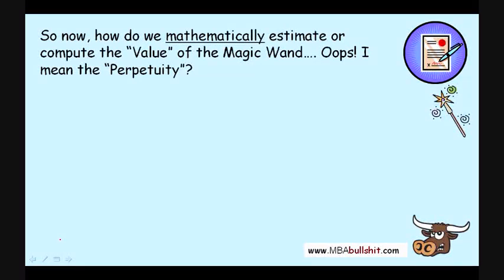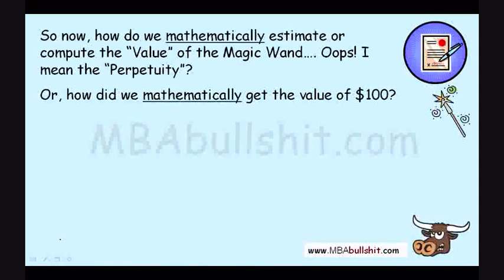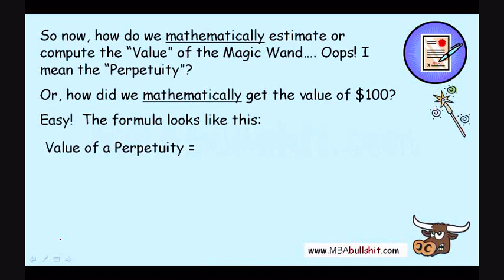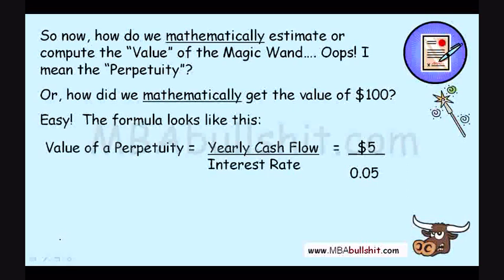So how do we mathematically estimate the value of the magic wand, or the value of the perpetuity? We use an easy formula: value of the perpetuity equals the yearly cash flow divided by the interest rate. We already know that the yearly cash flow is $5 and the interest rate is 5%, written mathematically as 0.05. So $5 divided by 0.05 equals $100.